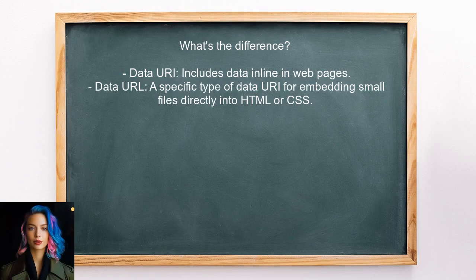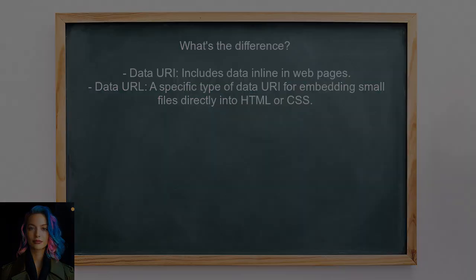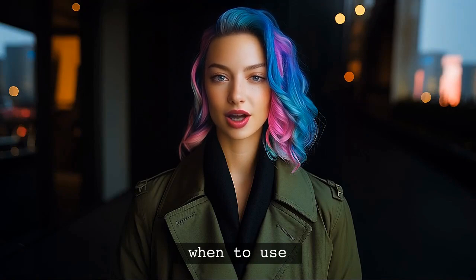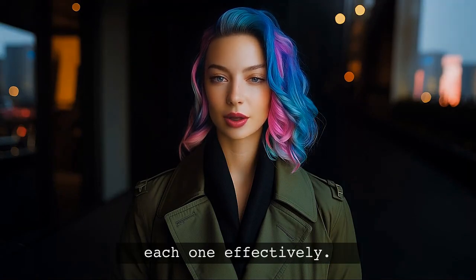So what exactly is the difference? A data URI is a way to include data inline in web pages, while a data URL is a specific type of data URI that is used to embed small files directly into HTML or CSS. Let's break this down further — and stick around, because at the end of this video I'll share a quick tip on when to use each one effectively.